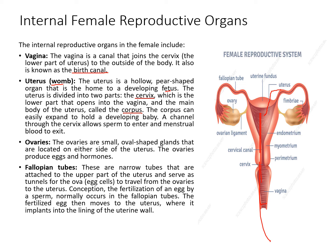The ovary is the main reproductive organ of the female. The ovaries are small oval-shaped glands located on either side of the uterus — two ovaries are present. The ovaries produce both eggs and hormones.